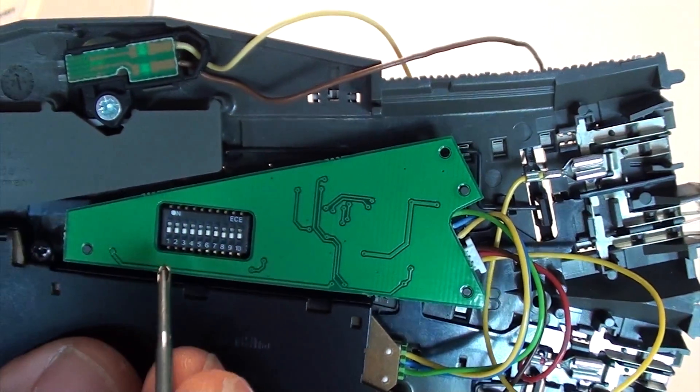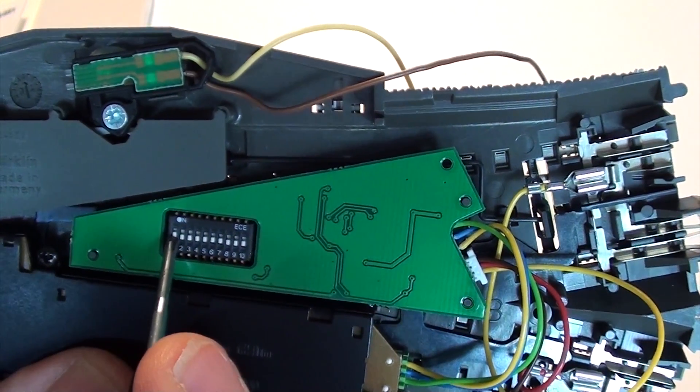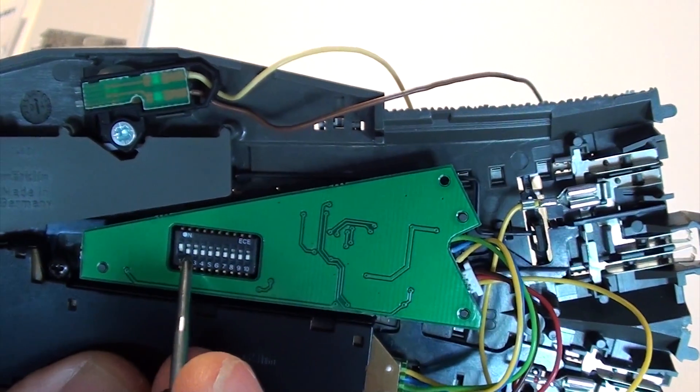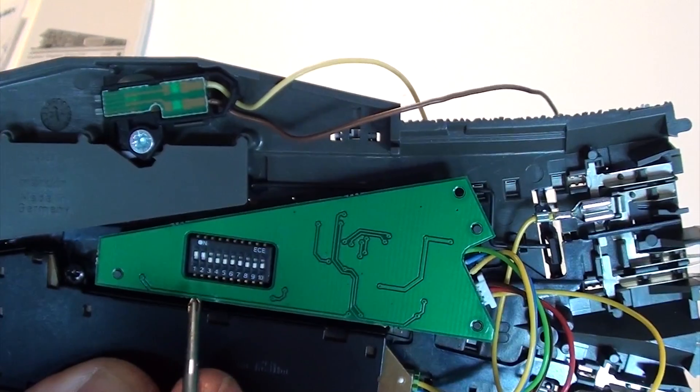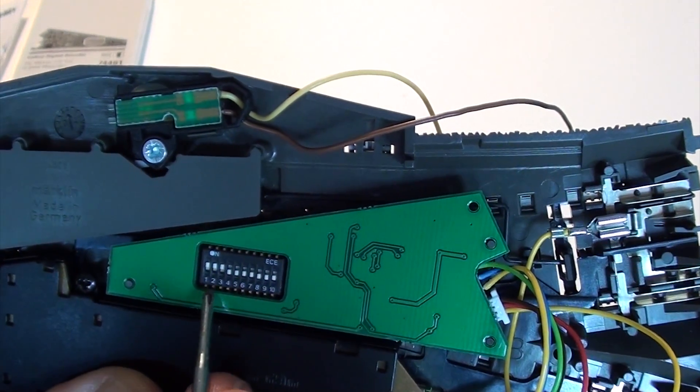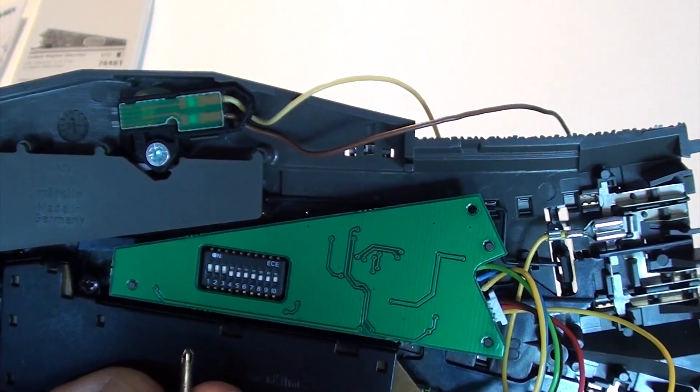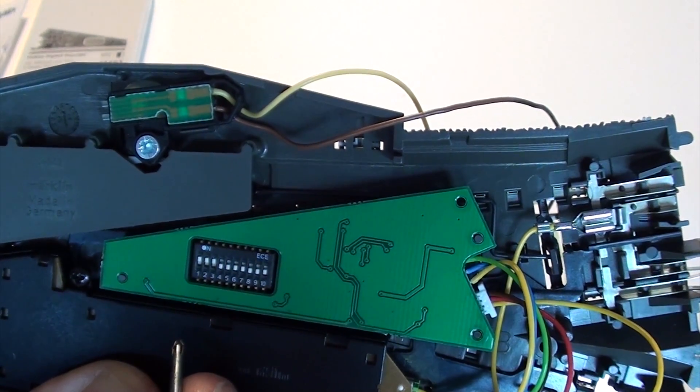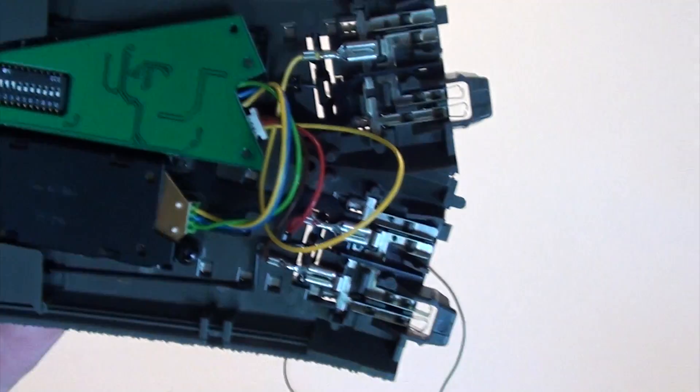So I grab the decoder and I slide position number one to on, which is up. Two to on. And finally three to on. One, two, three are on. Everything else is off. That's all it takes to set the address of the decoder.